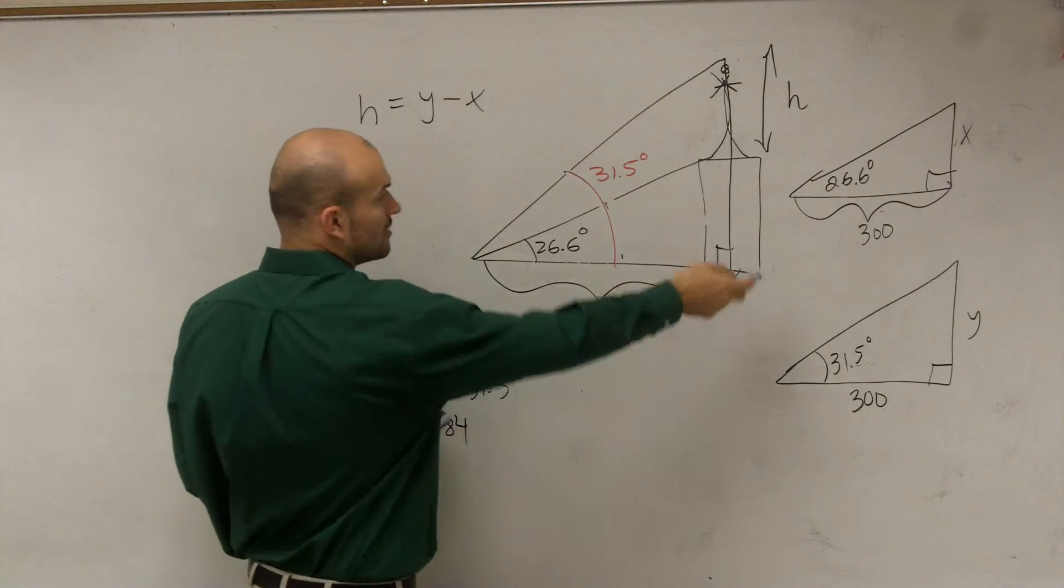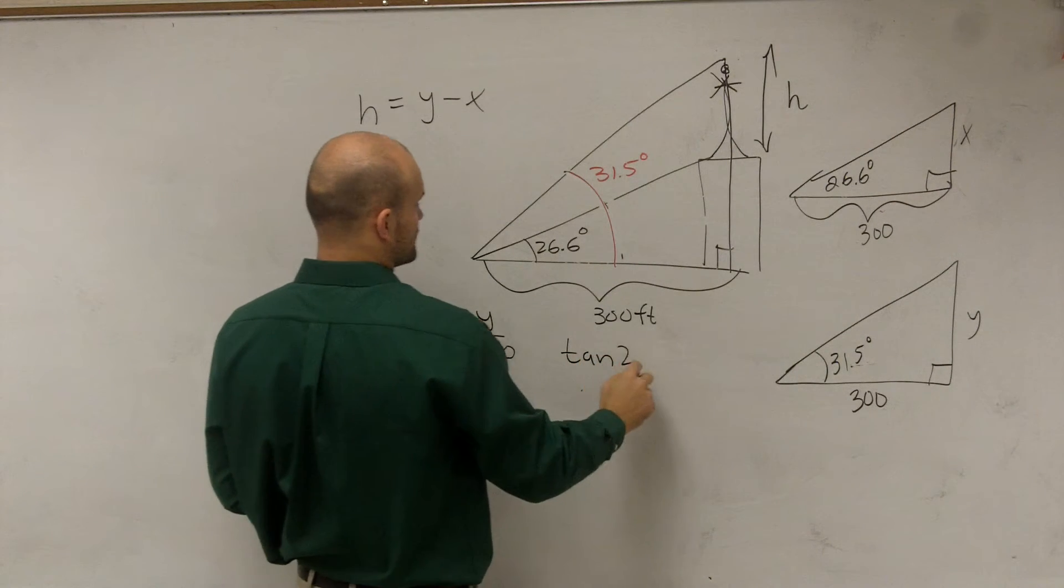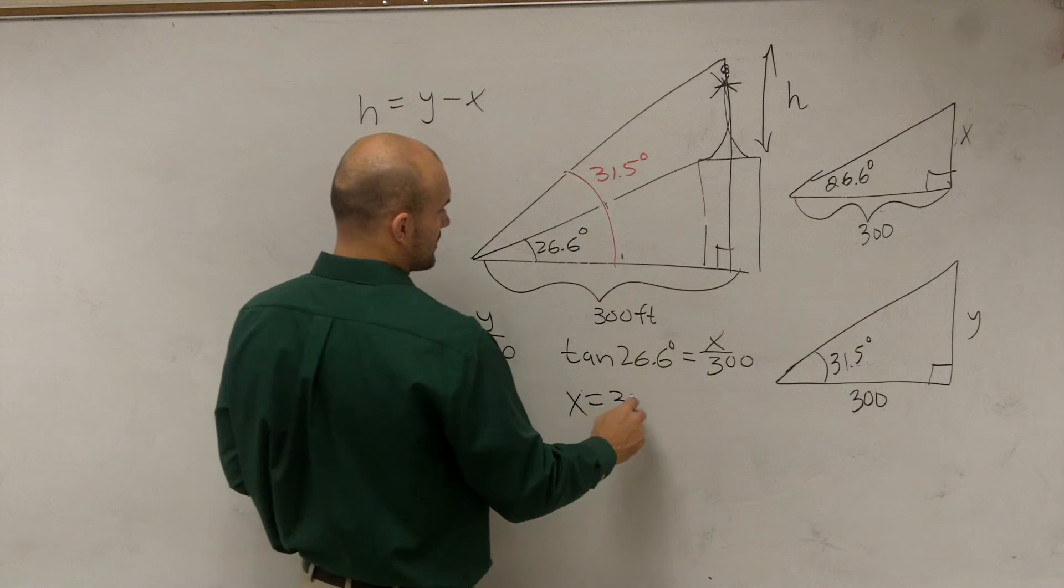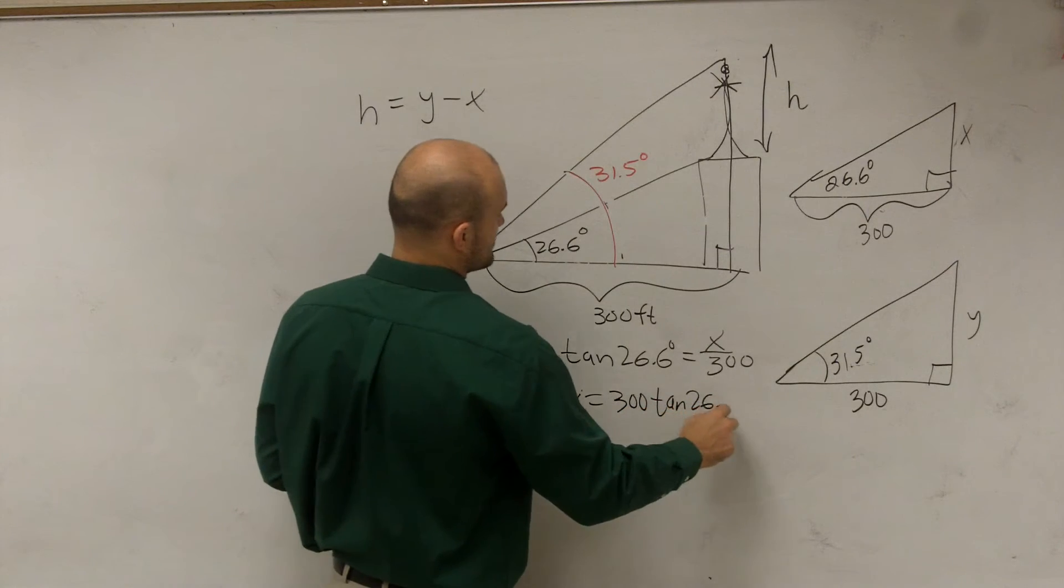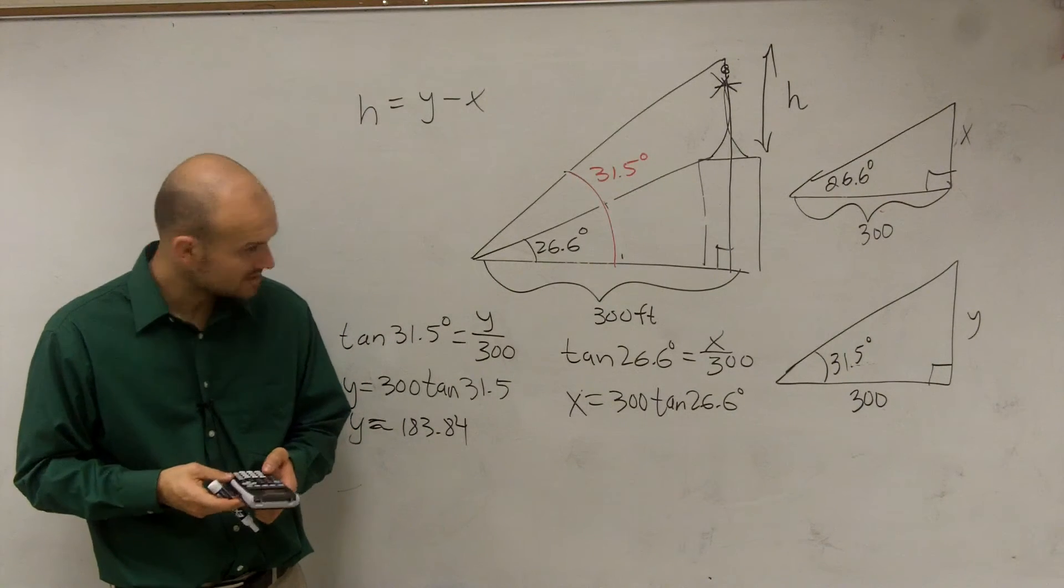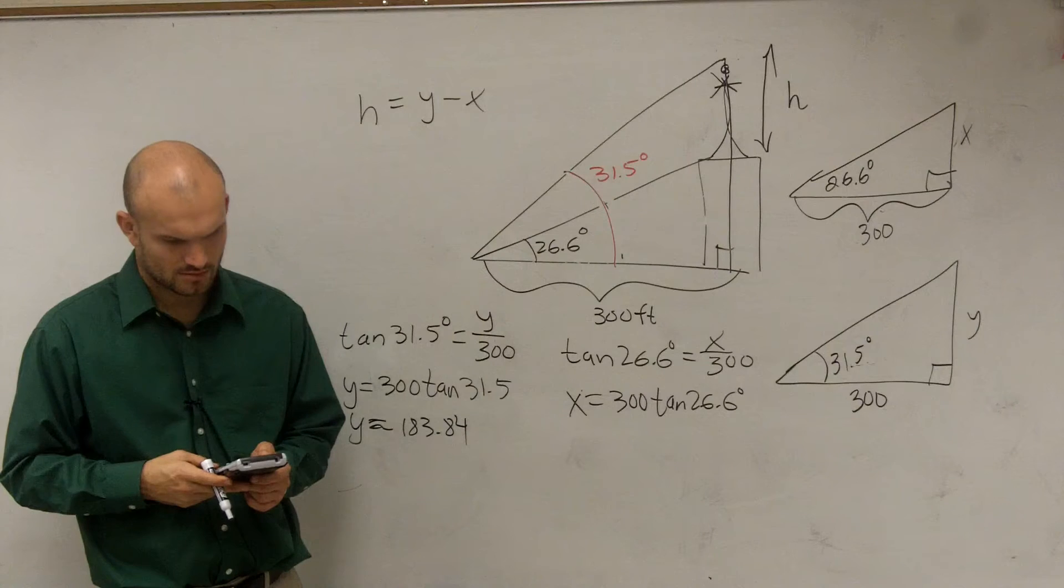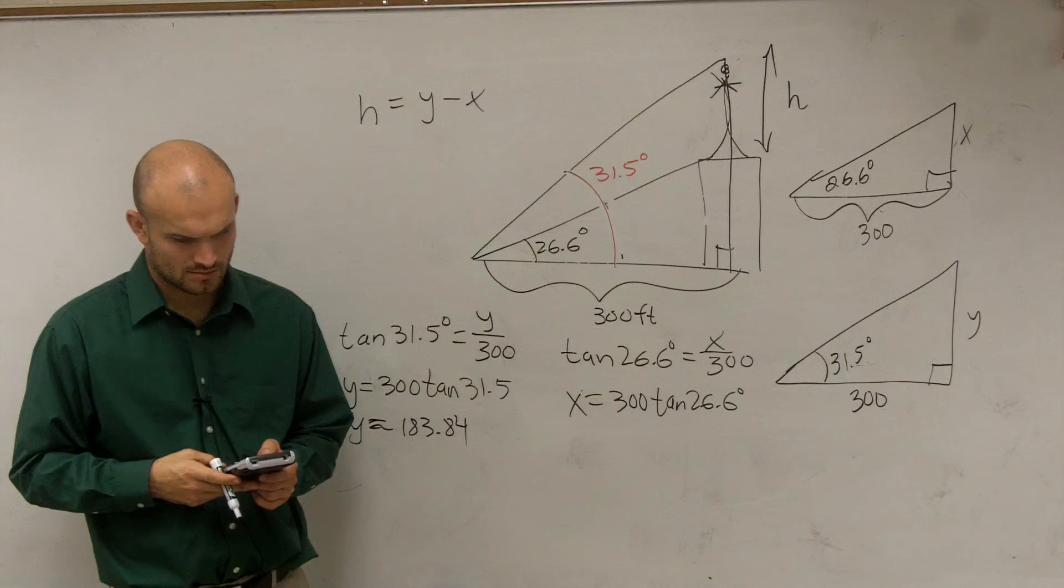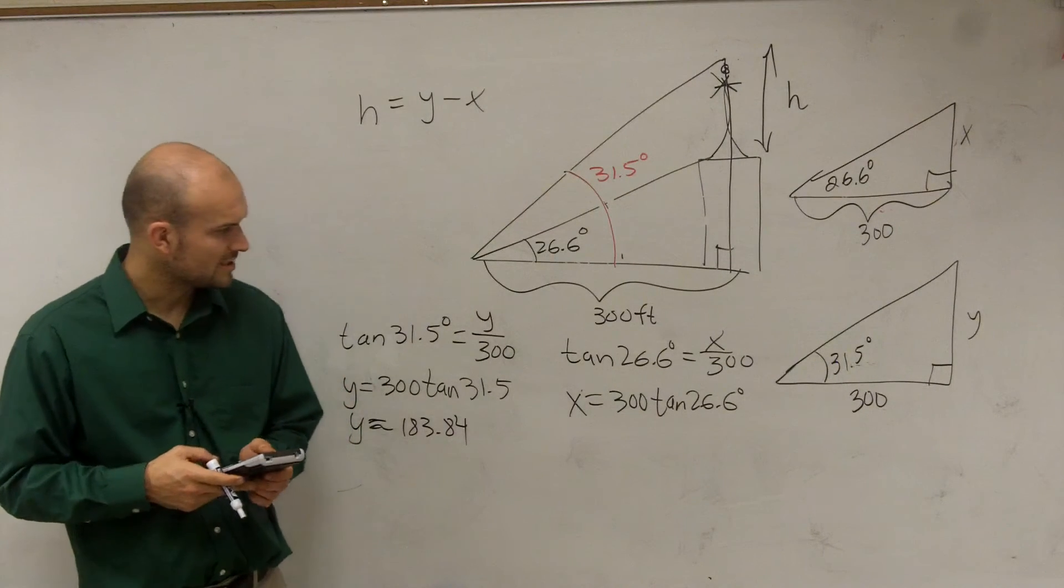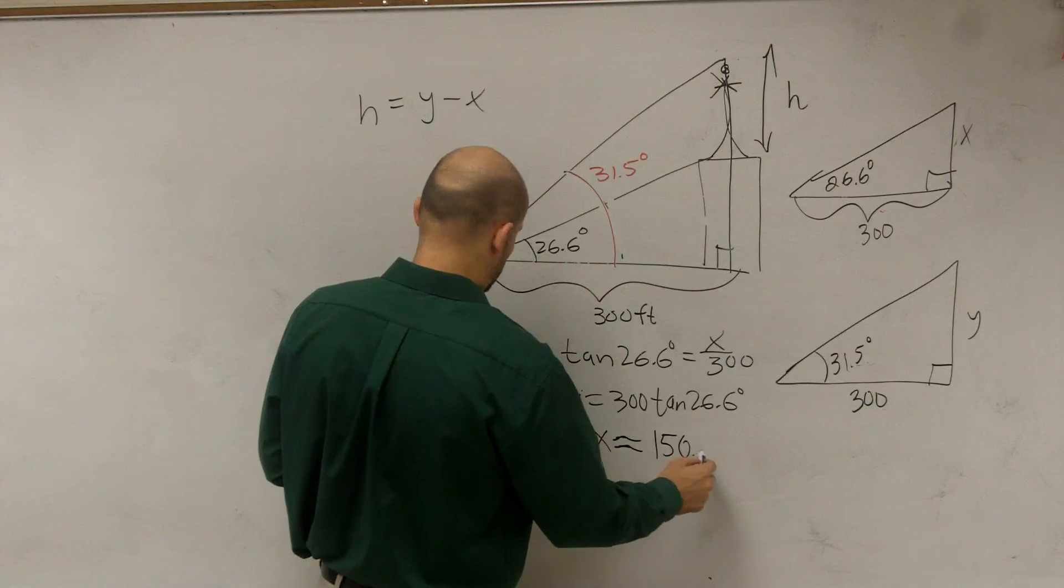Then let's do the next one, which would be tangent of 26.6 degrees equals x over 300. So we have tangent of 26.6 degrees equals x over 300. Again, x is going to equal 300 times tangent of 26.6 degrees. So therefore I just write in 300 times tangent of 26.6 degrees, which is 150.22. So x equals approximately 150.23.